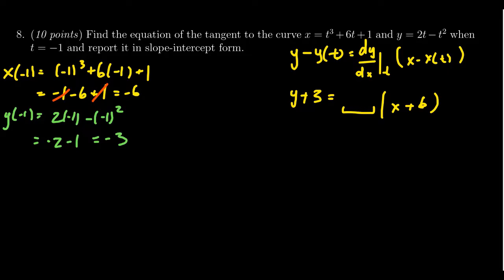What needs to still be computed is the derivative dy over dx. By the chain rule here, derivative of y with respect to x is the derivative of y with respect to t divided by the derivative of x with respect to t, like so.